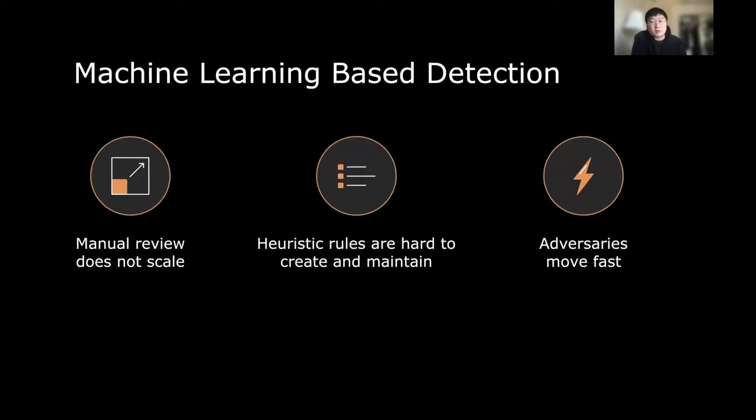The detection of abusive account comes with a few different challenges. For example, the number one here is that the manual review does not scale. It's just impossible for Facebook to review billions of abusive accounts all by human. Secondly, the heuristic rules are hard to be created and maintained over time, especially given we are in the adversarial environment and attackers keep changing all the time. Thirdly, of course, adversaries move extremely fast, and we have to always adapt our solutions to the new attack patterns. That being said, Facebook is investing in the machine learning based detection in a way that is sustainable and scalable.